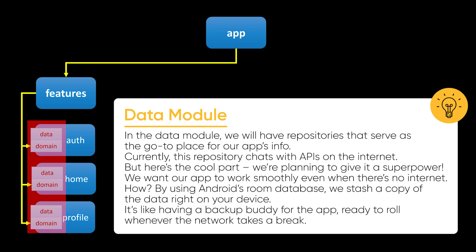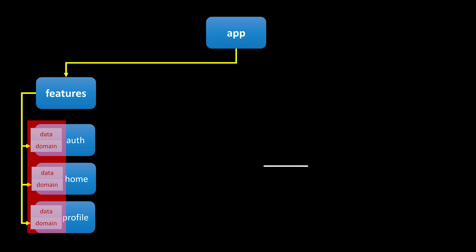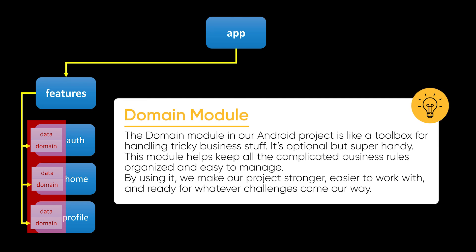The data module is like the info hub — it gets data for our module mostly from the internet using API calls. But we are smart; we can also use local storage in our application to keep things running when the internet is on vacation. Then we have the domain module — it is like the brains of the operation, it deals with tricky data stuff.